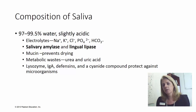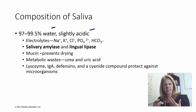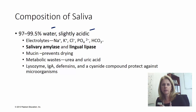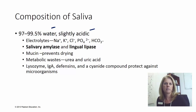What does saliva have in it? It's mostly water and slightly acidic. It contains electrolytes like sodium, potassium, chloride, phosphate, and bicarbonate. It's got enzymes — one for sugar, one for fat. It also has mucin, that mucousy feeling in your mouth that keeps it from drying out. It has some metabolic wastes like urea that are excreted in your mouth. And it's part of your immune system — lysozymes and immunoglobulins form a chemical barrier against bacteria getting into your system.